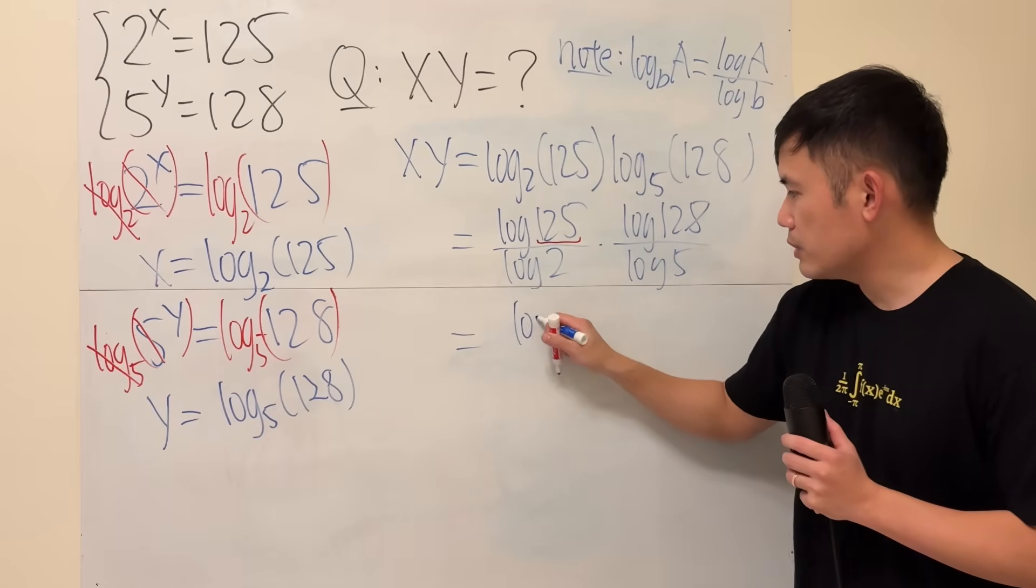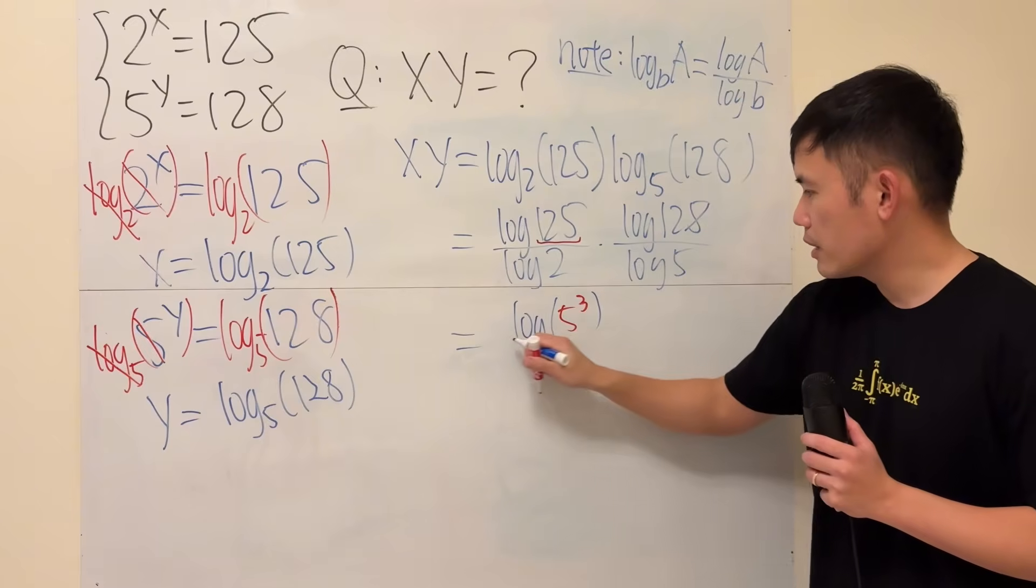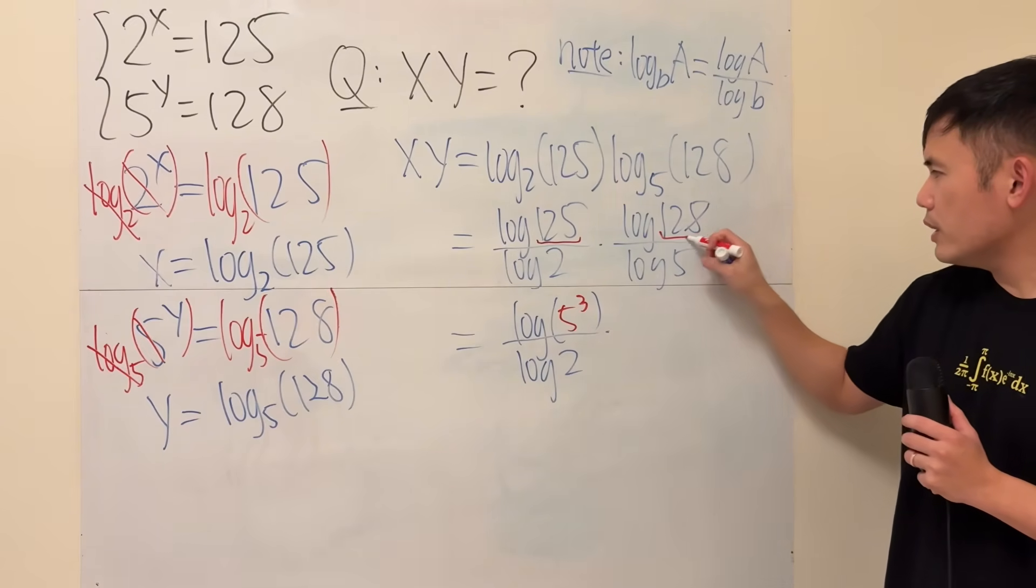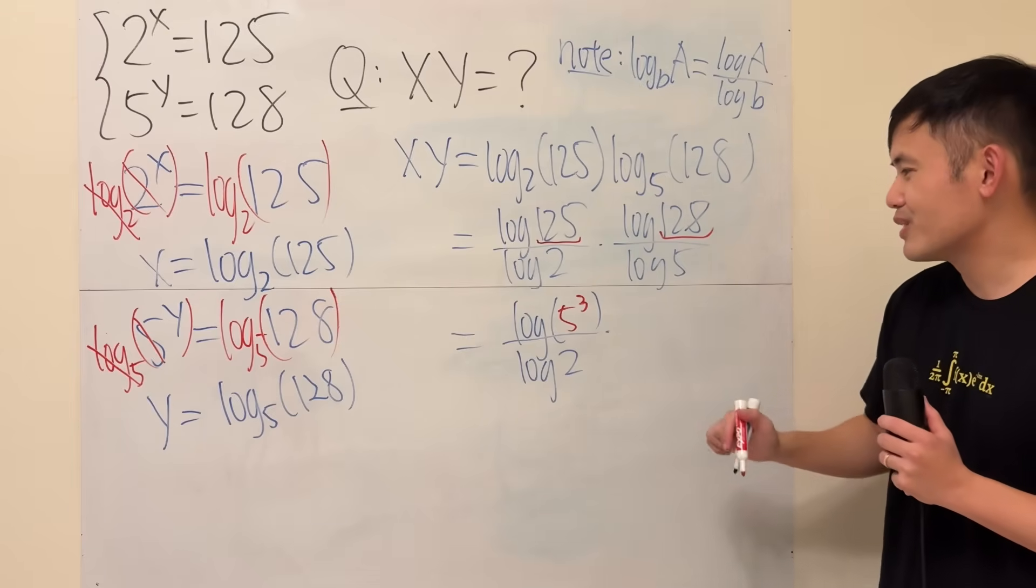So let's do that, and you'll see why. That's 5 to the third power. So, and then keep this. And the 128 is 2 times 2 times 2, and 7 of them. So 2 to the seventh power.